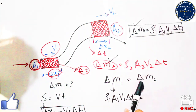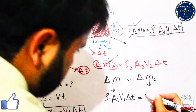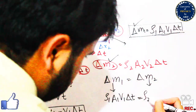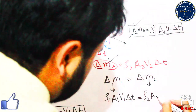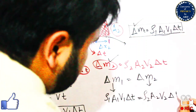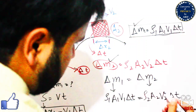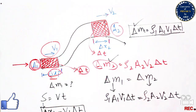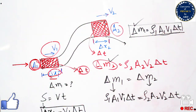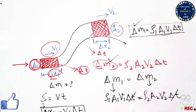So rho1 times A1 times v1 times delta t equals rho2 times A2 times v2 times delta t, where v is velocity. Delta t can be cancelled from both sides.